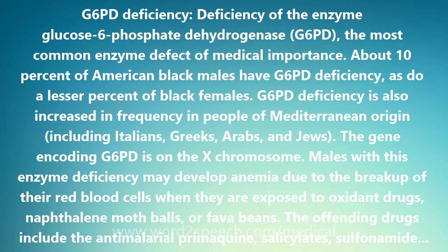The gene encoding G6PD is on the X chromosome. Males with this enzyme deficiency may develop anemia due to the breakup of their red blood cells when they are exposed to oxidant drugs, naphthalene moth balls, or fava beans. The offending drugs include the antimalarial primaquine,